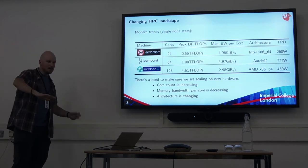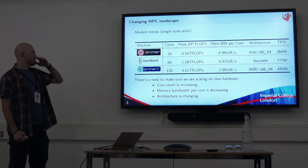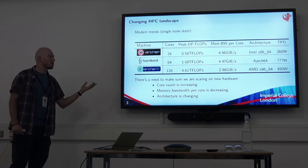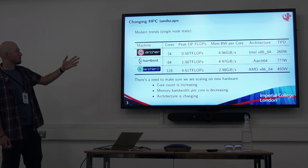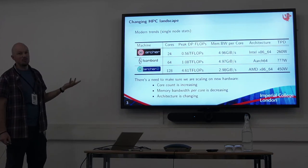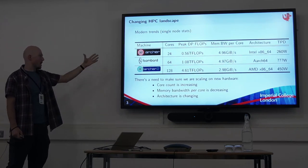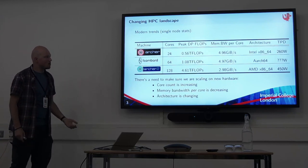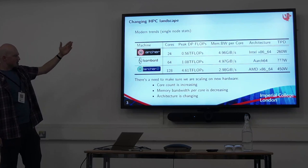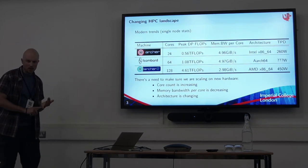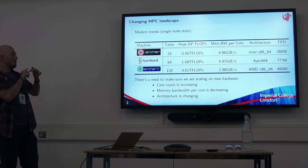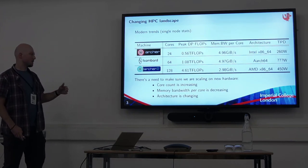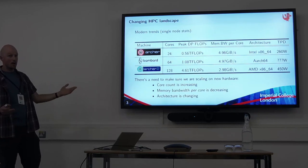For an idea of what the trends in HPC are, I really like this table. A while ago we used to have a national supercomputer called Archer: 24 cores per node, about half a teraflop, memory bandwidth of nearly 5 gigabytes per second, and a typical power draw of 260 watts. Then intermediate between that and the next national supercomputer there's Isambard — more cores, more flops, about the same memory bandwidth but a different architecture. The general trend as you go forward in time is your core count is increasing, and whilst total memory and flops are increasing, your memory bandwidth per core is decreasing. The architecture is also changing.